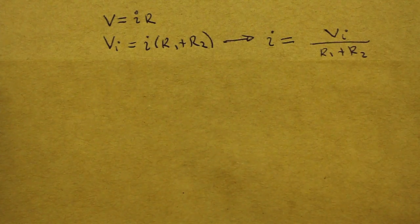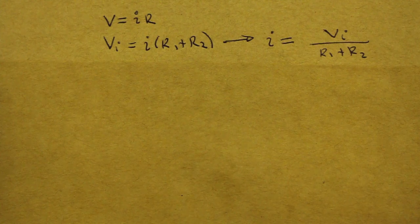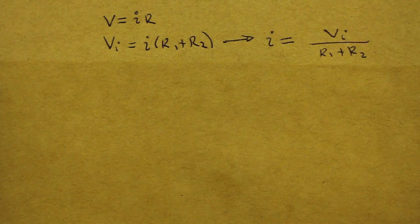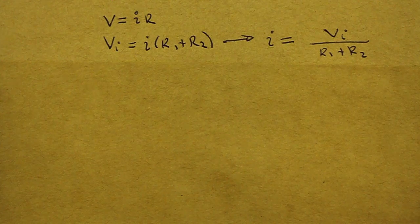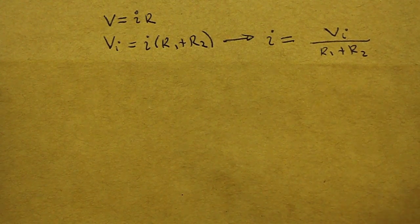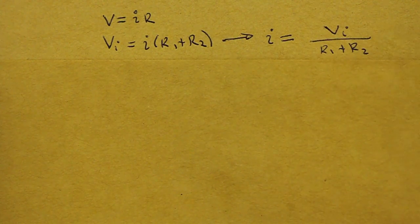How we arrive to this equation is really simple. We start from Ohm's law. Voltage equals current times resistance. So our total voltage is the input voltage, Vi, and this equals the current times the total resistance, which is the sum of the two resistors. Remember, this is a series circuit. So the current I is the same in both resistors. From here, we can solve for the current and we obtain this value.